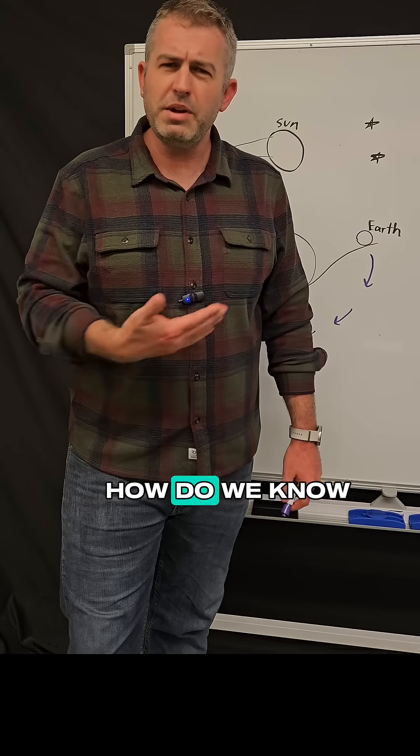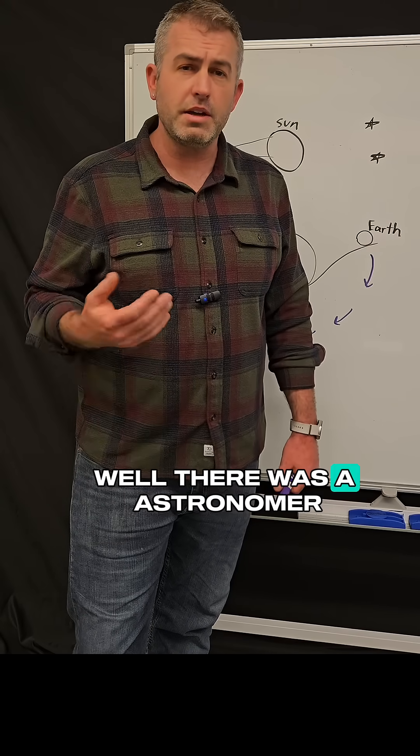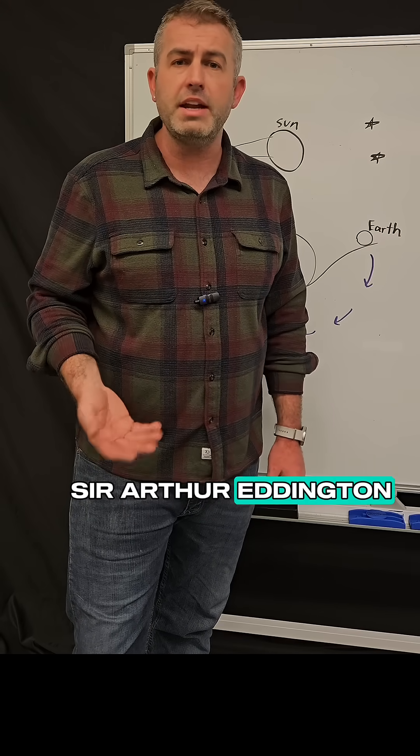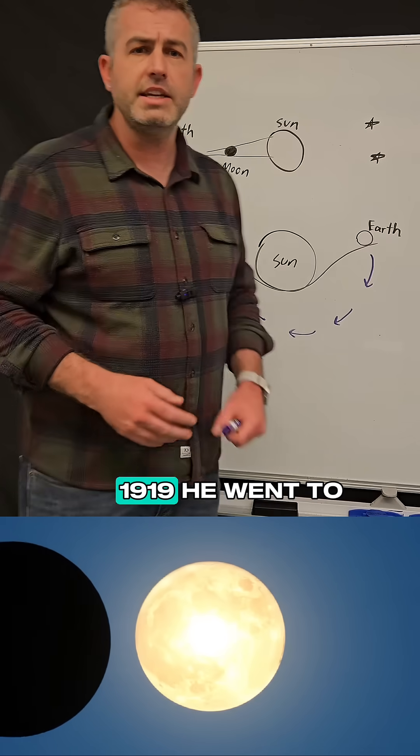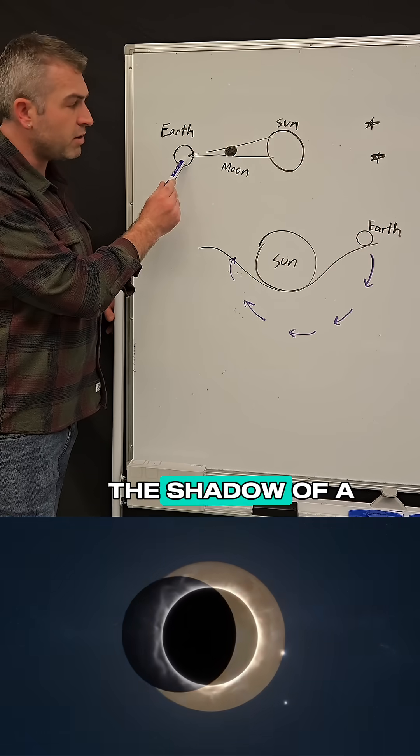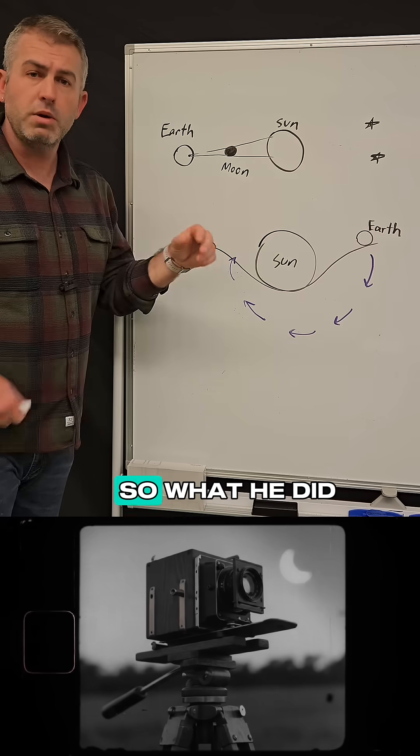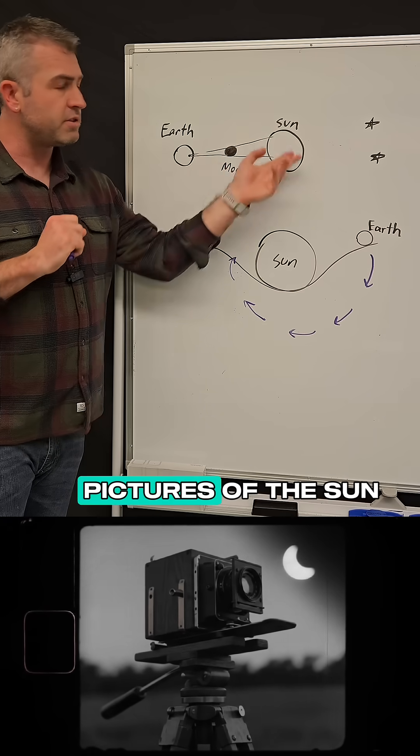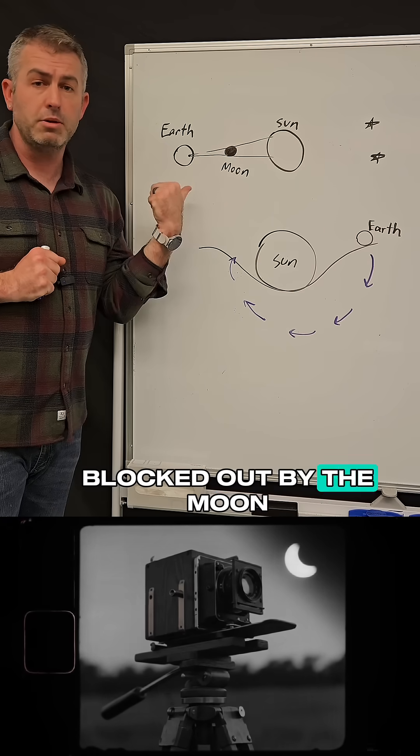But wait a minute, how do we know any of this is actually real? Well there was an astronomer by the name of Sir Arthur Eddington and in the year 1919 he went to a location on Earth that was directly in the shadow of a solar eclipse. So what he did was he took out his camera and he started taking pictures of the Sun while it was being blocked out by the Moon.